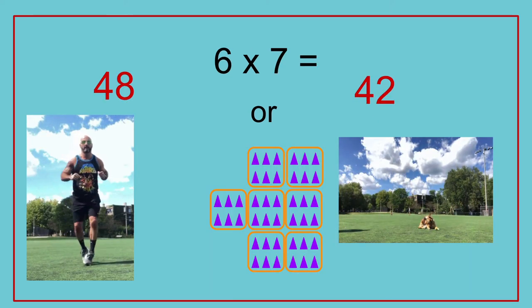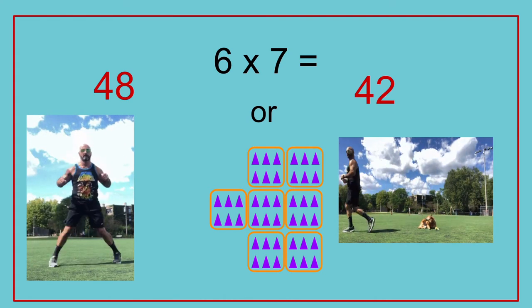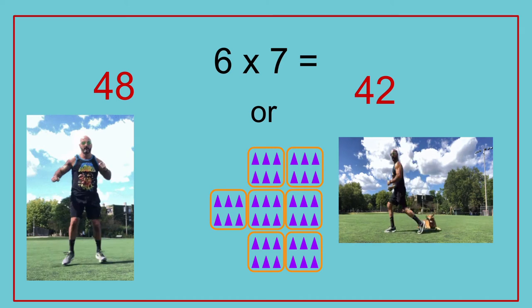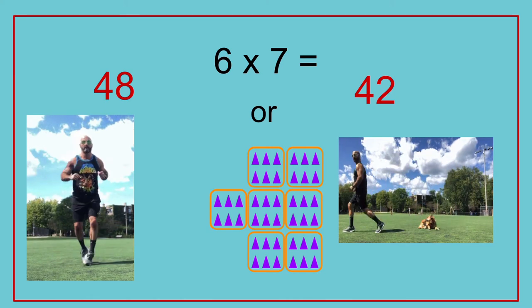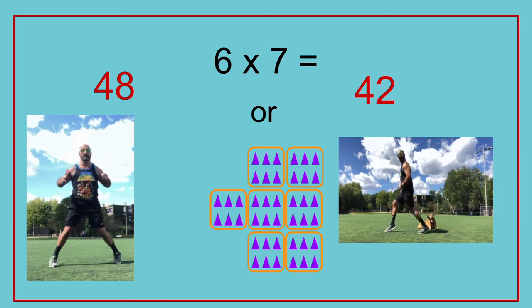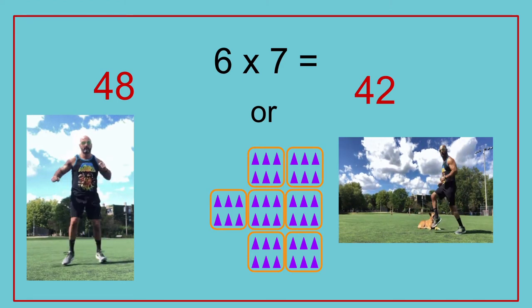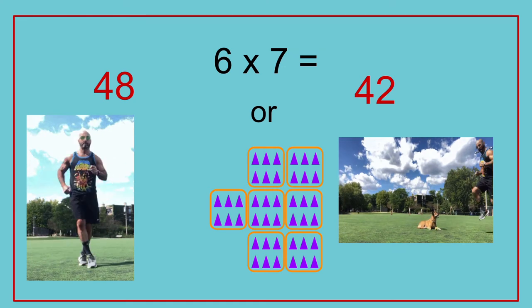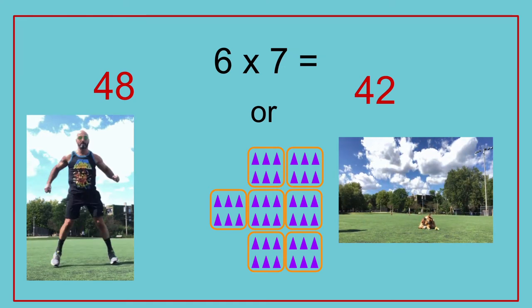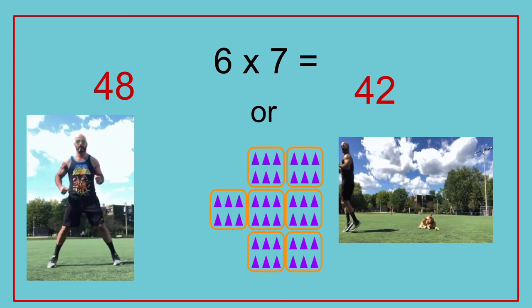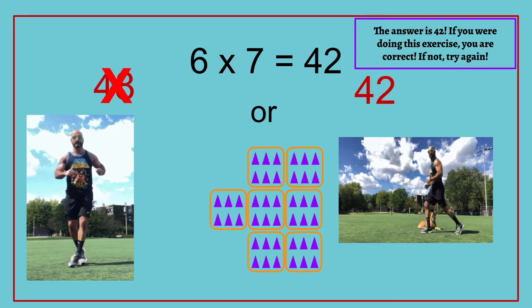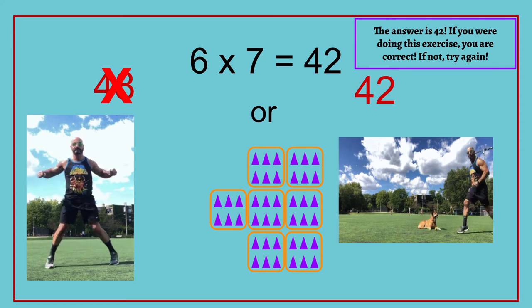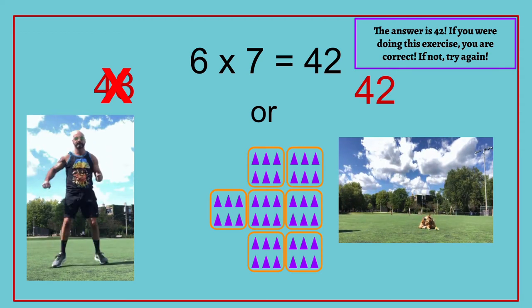6 times 7 equals — 48 or 42? The answer is 42. If you are doing this exercise, you are correct. If not, try again. 6 times 7 equals 42.